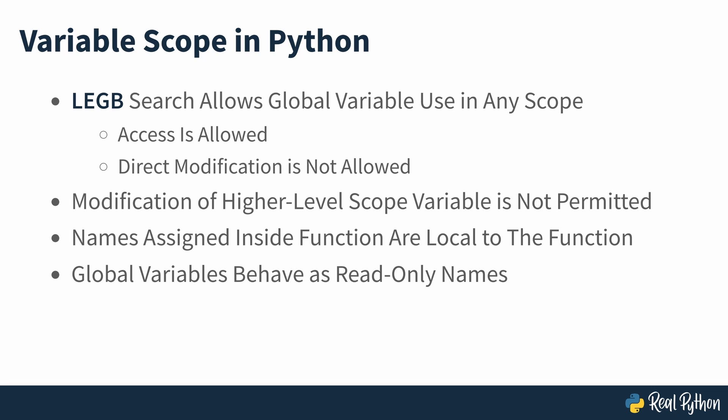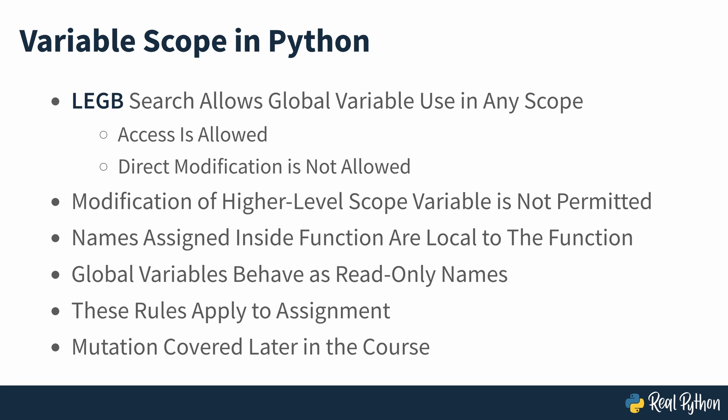In this sense, global variables behave as read-only names. You can access their values, but you can't modify them. The discussion about modifying global variables inside a function revolves around assignment operations, rather than in-place mutations of mutable objects. You'll learn about the effects of mutability on global variables later on in the course.